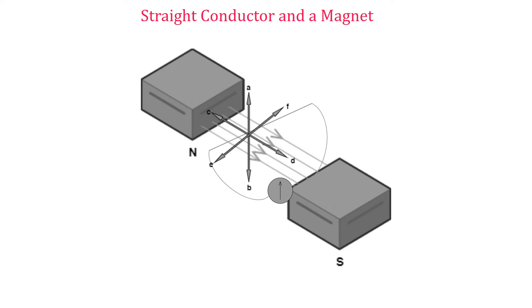To investigate this phenomenon: the wire is held at rest between the poles of a magnet, and the ends of the wire are connected to a galvanometer. The wire is then moved in each of six directions. It is only when it is moving upwards or downwards that a deflection is seen on the galvanometer, indicating that EMF is induced or current is produced. The deflection when the conductor moves upwards will be opposite to the deflection when it moves downwards.